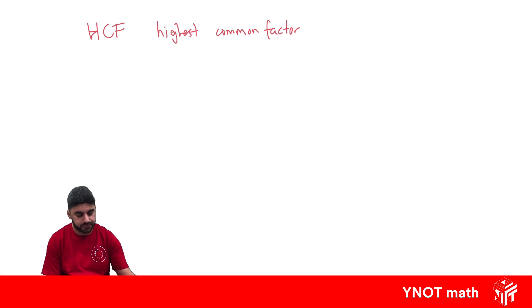We're just going to look at two numbers for now. We're going to look at 24 and 32. We want to know what the Highest Common Factor is. Remember a factor is numbers that multiply to get us to that number.